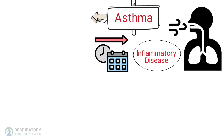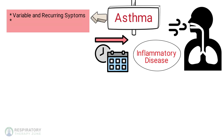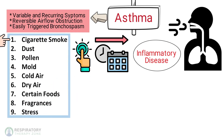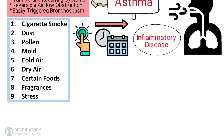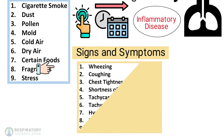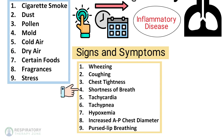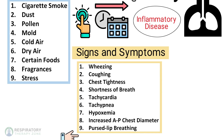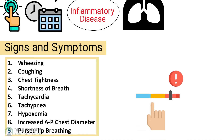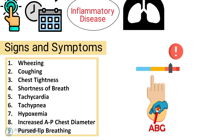Asthma is a common long-term inflammatory disease of the airways of the lungs. It is characterized by variable and recurring symptoms, reversible airflow obstruction, and easily triggered bronchospasm. An asthma episode is often caused by certain triggers such as cigarette smoke, dust, pollen, mold, cold air, dry air, certain foods, fragrances, and stress. Some signs and symptoms to be aware of include wheezing, coughing, chest tightness, shortness of breath, tachycardia, tachypnea, and hypoxemia.